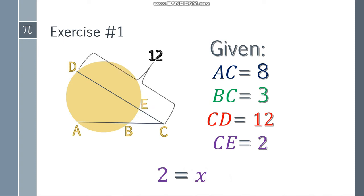The whole segment is 12, the small external segment is 2, the whole AC is 8, and the small external segment BC is 3. Moving on.